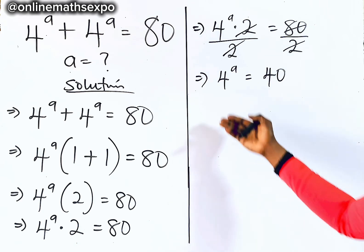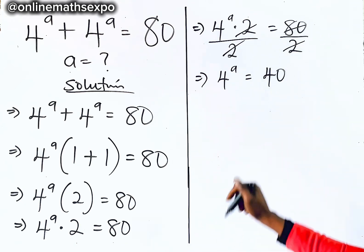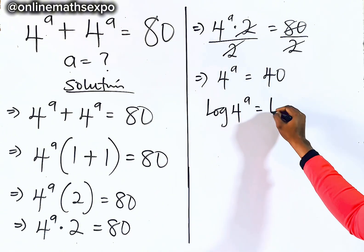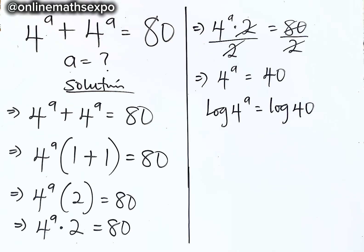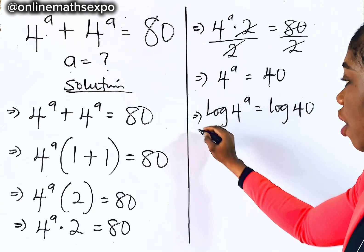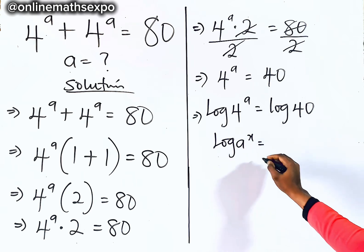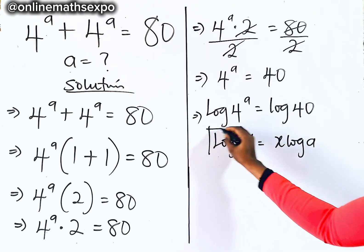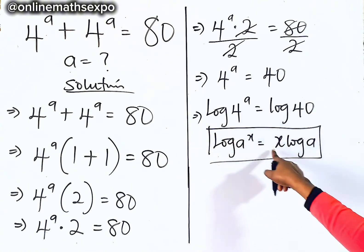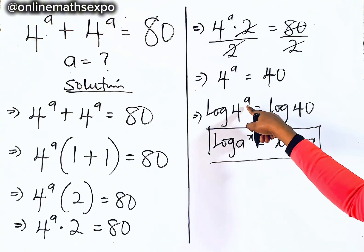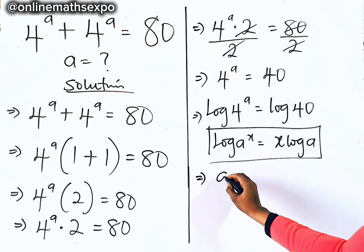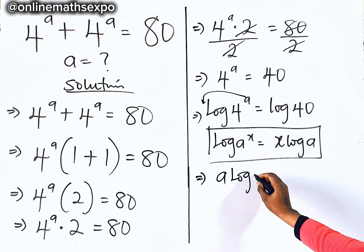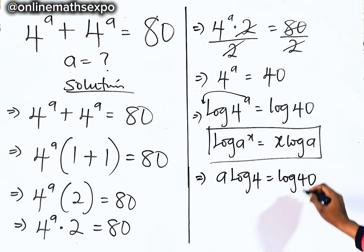Now what do you do? At this point, take the log of both sides. So we have log of 4 to the power of 8 is equal to log of 40. Now remember, for every log of B to the power of x, it is x times log of B. The power of the log will always multiply. So applying it here, 8 becomes the multiplier: we have 8 log 4 equal to log of 40.